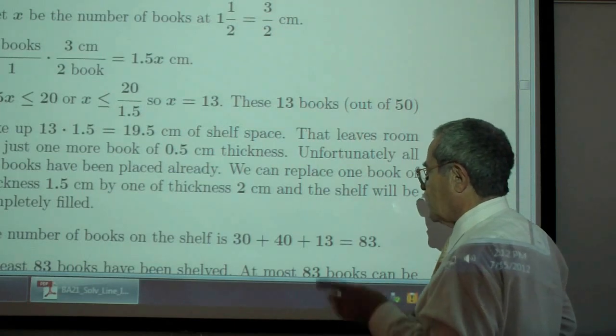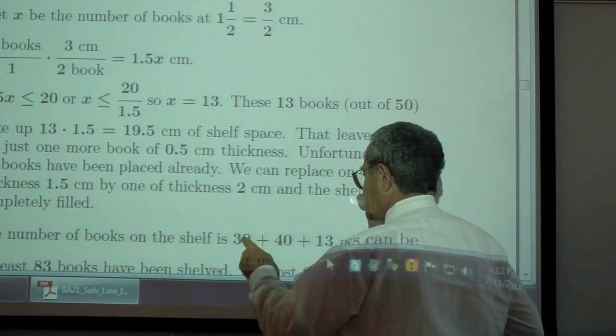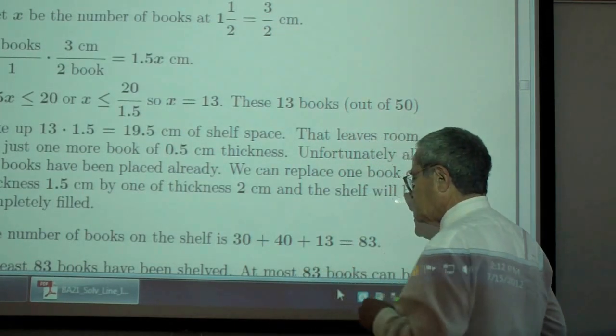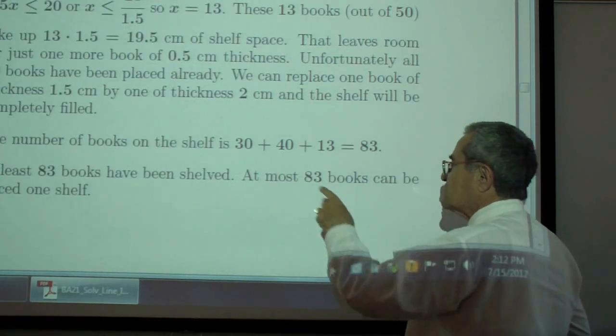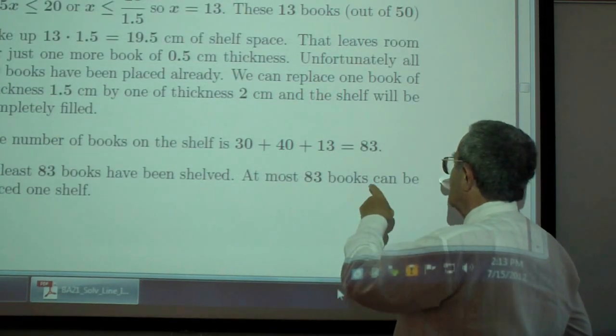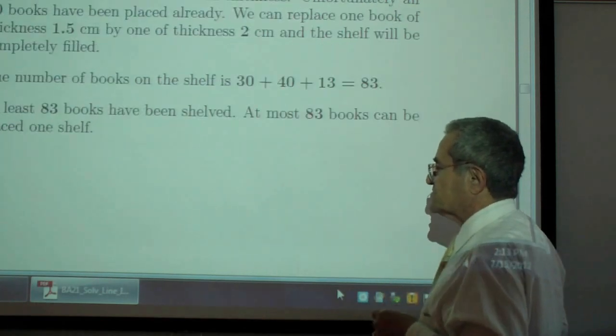The number of books on that very first shelf then is 30 plus 40 plus 13 or 83. At least 83 books have been shelved. At least 83 books can be placed on one shelf.